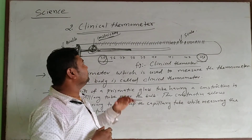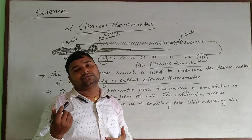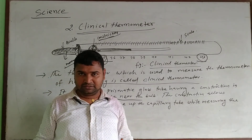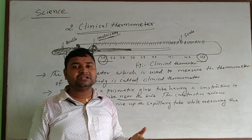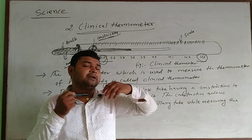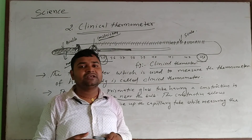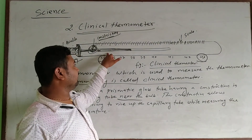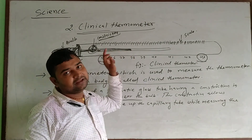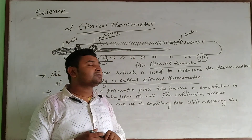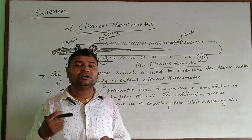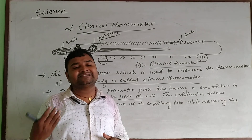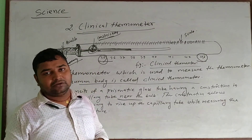In this way we can easily use the clinical thermometer. Take a thermometer, keep it in the armpit, and after two or three minutes remove it and carefully look at the level of mercury in the capillary tube. In the next class we will talk about the minimum and maximum thermometer, and what are the advantages and disadvantages of mercury.